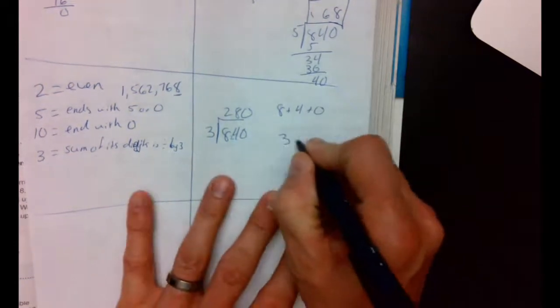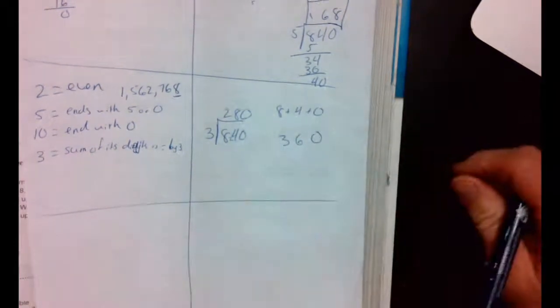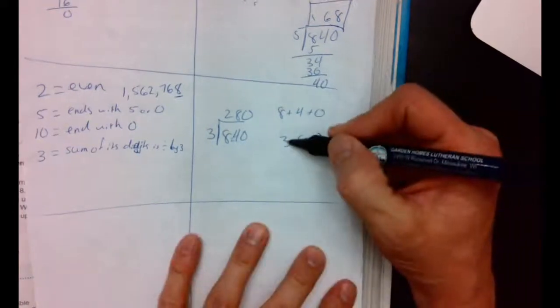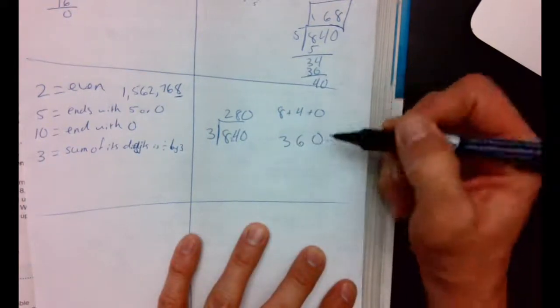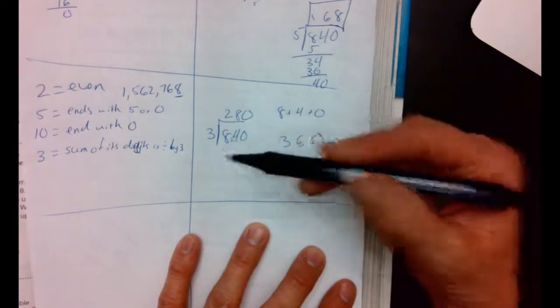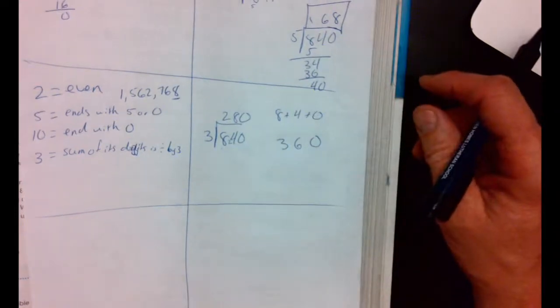Well, what about this one? 360. Is that divisible by 3? Well, let's add them up. 3 plus 6 is 9. Is 9 divisible by 3? Yes. Then 360 is divisible by 3.